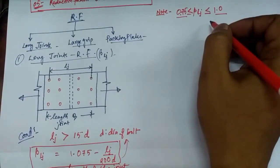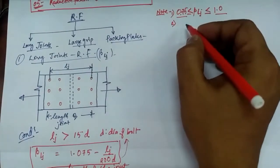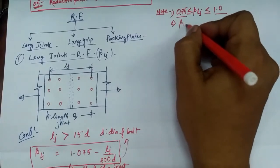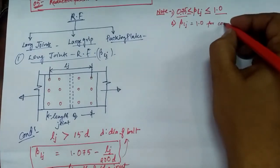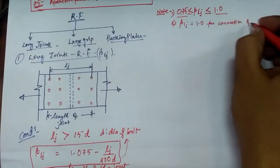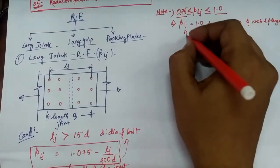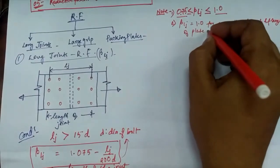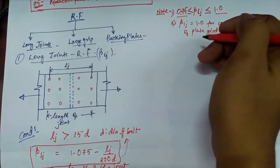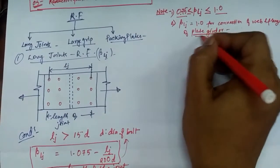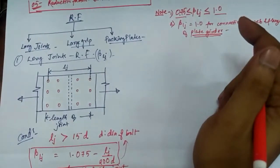Another important note: beta LJ = 1.0 for connections of web and flange of a plate girder. Just take note of this point — when we discuss plate girders we will return to it.